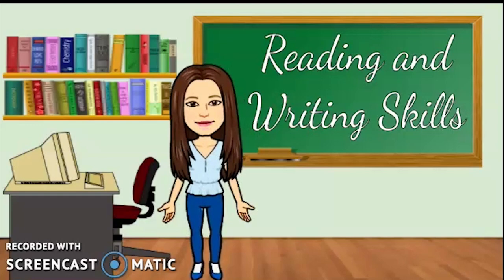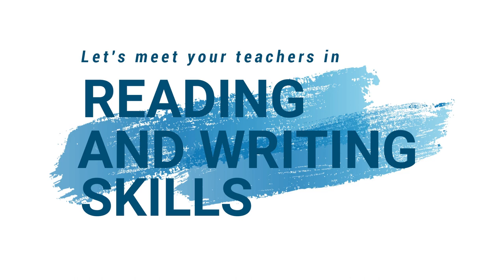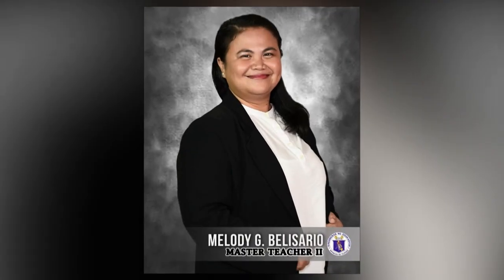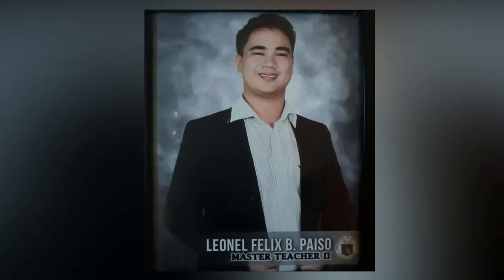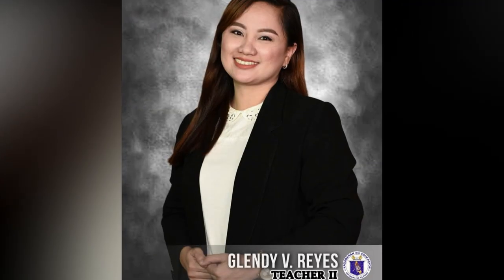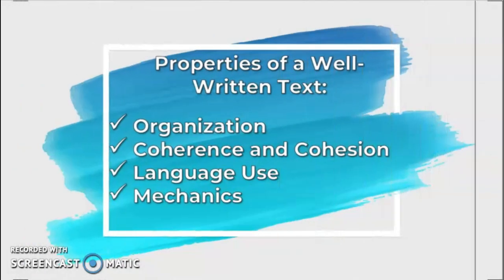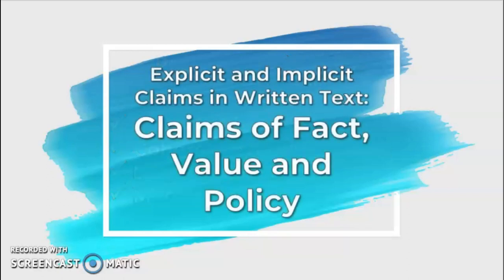Hello everyone, welcome to our reading and writing skills class. A pleasant day to everyone. Let's have first a recap of our previous discussion. Last week, we discussed about the different properties of a well-written text such as organization, coherence and cohesion, language use and mechanics. For this week, we will study about explicit and implicit claims in written text, claims of fact, value and policy.